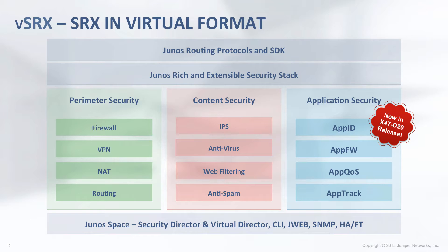The UTM feature includes comprehensive content security with best-in-class antivirus, antispam, web filtering, and content filtering services. IPS, on the other hand, protects the network by inspecting data traffic and taking actions against attacks as they are developing. IPS is tightly integrated with Juniper's application security features to protect against a wide range of attacks and vulnerabilities.